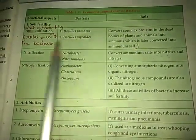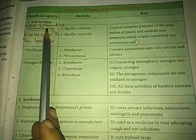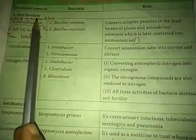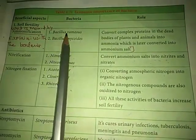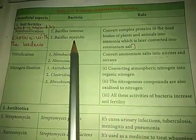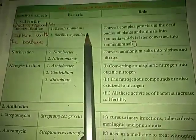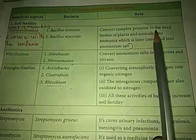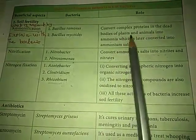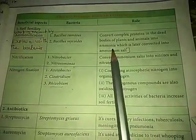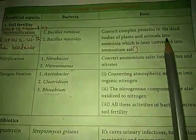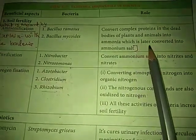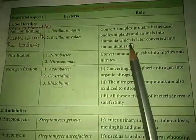The role of bacteria in soil fertility — Ammonification. The bacteria Bacillus rhamusus and Bacillus mycarrus convert the complex protein in the dead bodies of plants and animals into ammonia, which is later converted into ammonium salt.